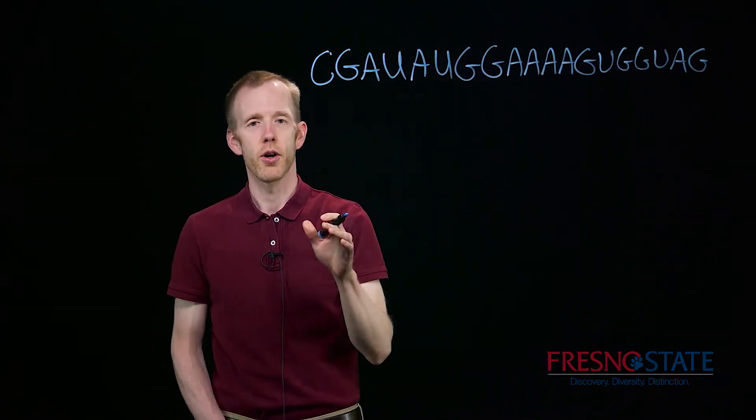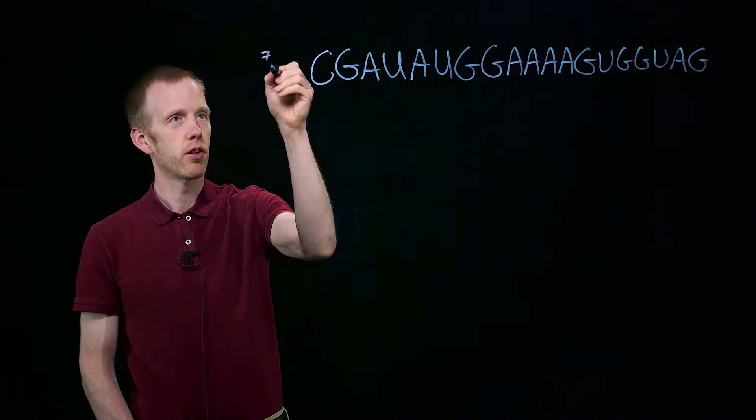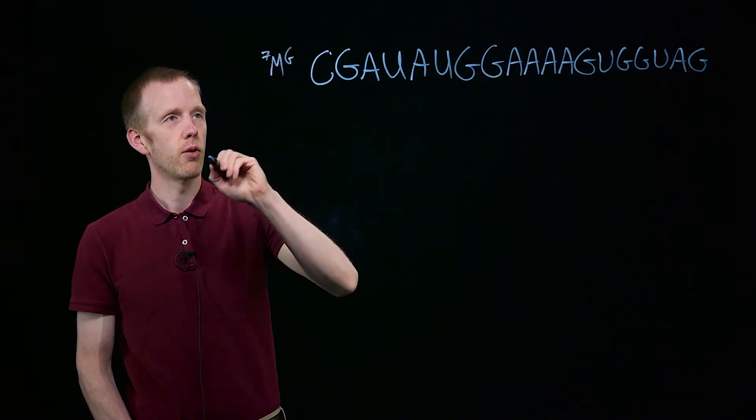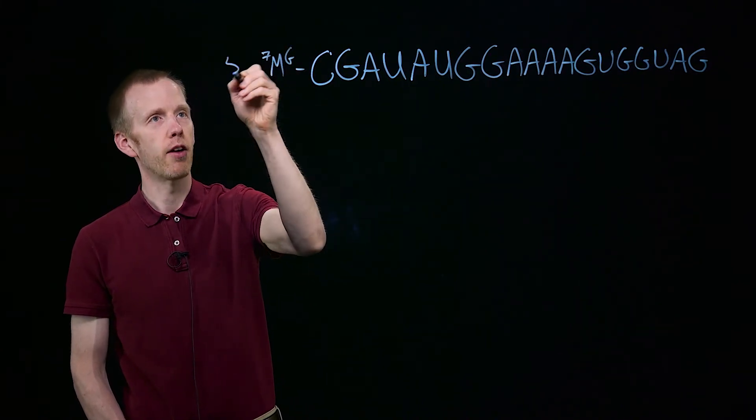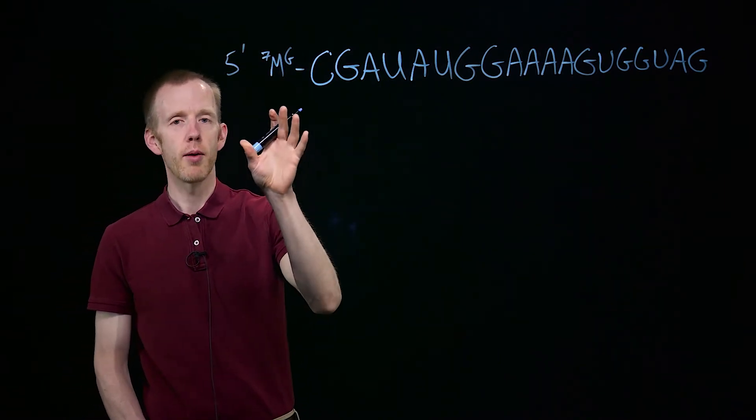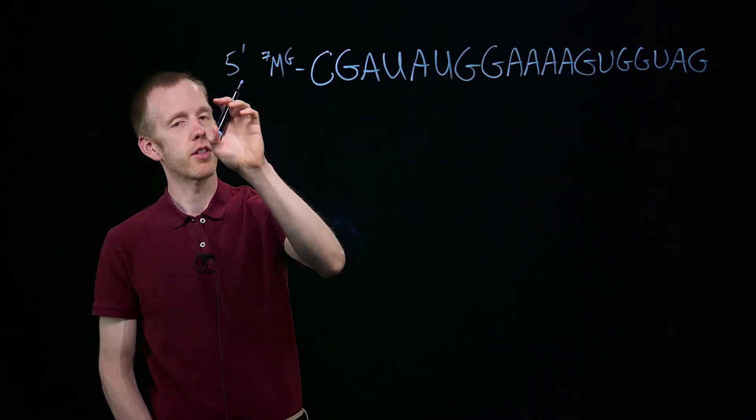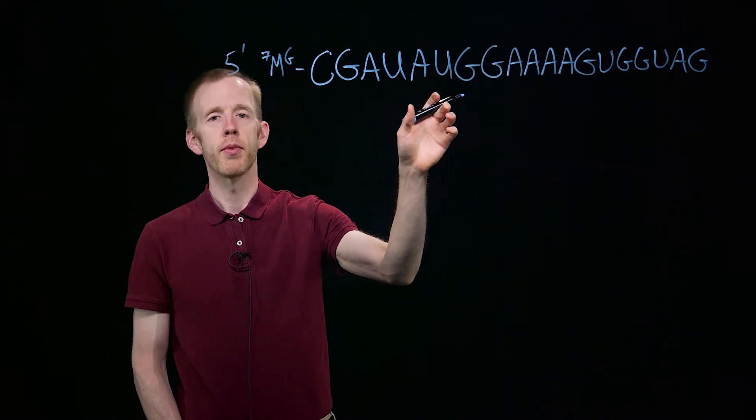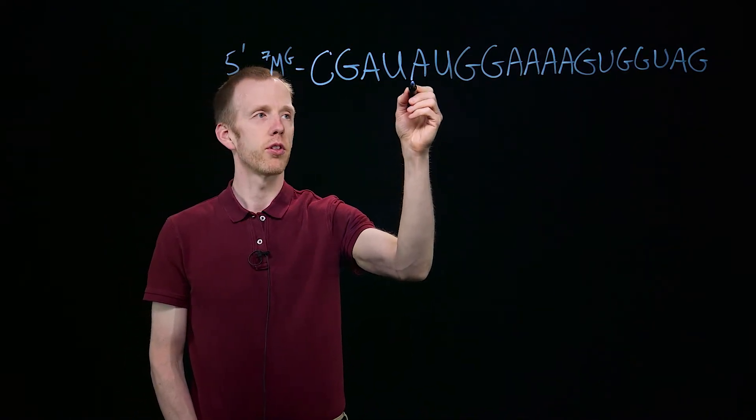We're going to start off by translating this. It's a eukaryotic messenger RNA. The first thing we need to do, assuming this is eukaryotic, we have a 7-methylguanine cap on the 5' end of this transcript. A ribosome will bind to that cap and scan from 5' to 3' until it encounters the first start codon.